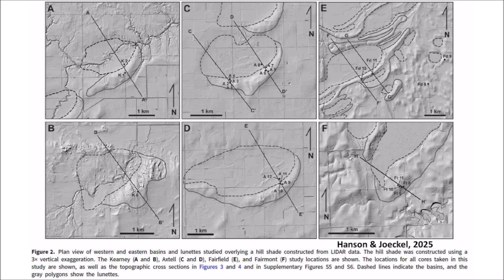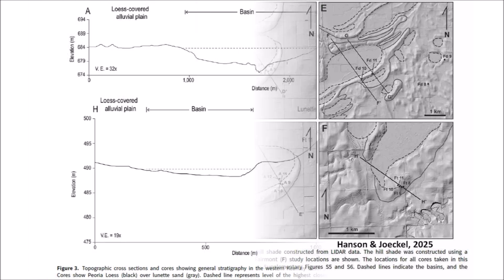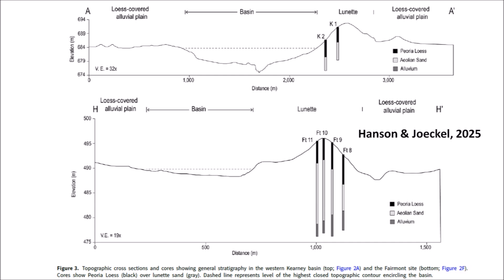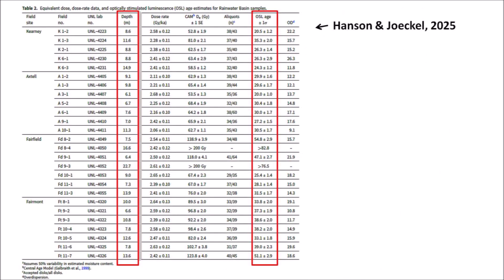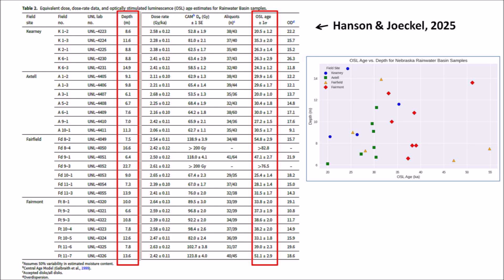Figure 2 shows the western and eastern basins that were studied, depicted as hillshade images constructed from LiDAR data using 3x vertical exaggeration. The text says most of the rainwater basins are ovoid, with long axis aligned prominently northeast-southwest and are partially bounded by one or more lunettes along their southern, southeastern, or eastern margins. Figure 3 illustrates topographic cross-sections showing general stratigraphy of the loess-covered alluvial plain in the western Kearney basin and the Fairmont site. Table 2 shows OSL samples from lunettes at six basins; I created a scatter plot of OSL age on the horizontal axis and sample depth on the vertical axis based on the numbers in this table.